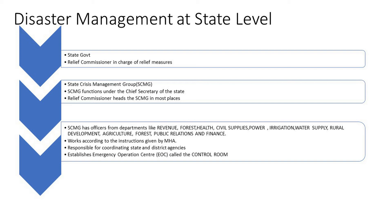The departments that help the SCMG include revenue, forest, health, civil supplies, power, irrigation, water supply, rural development, agriculture, public relations, and finance. They work under the instruction given by the Ministry of Home Affairs and are responsible for coordinating state as well as district agencies. In the event of a crisis, the SCMG establishes an emergency operation center — what we laymen call the control room — which provides updates about weather conditions and possibilities of heavy rain or storm. This control room functions as the contact point for coordinating disaster management efforts, connecting all the agencies and NGOs to effect quick relief to areas where the calamity has occurred.